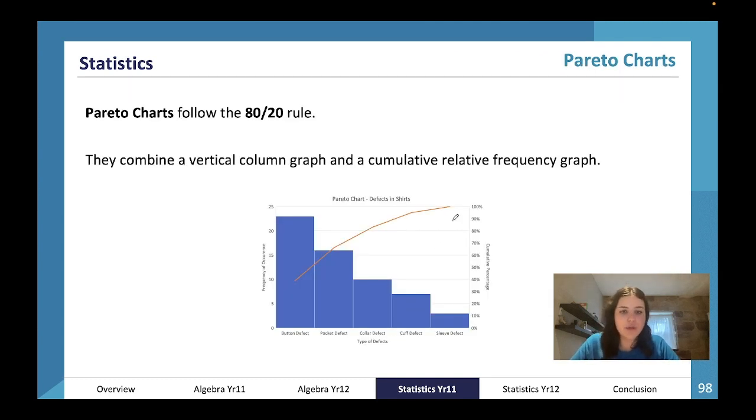Pareto charts follow the 80/20 rule. Basically, 80% of the study you do will allow you to achieve about 20% of the marks in the final exam, and the other 80% of your marks are going to come from 20% of the studying you do, which is more likely to be active study like practice papers. They combine a vertical column graph and a cumulative relative frequency graph. This line is showing the cumulative relative frequency. If we go down to 80, 80% of all defects come from button defect, pocket defect, and a little bit of collar defect, so cuff defect and sleeve defect are not responsible for 80% of problems.